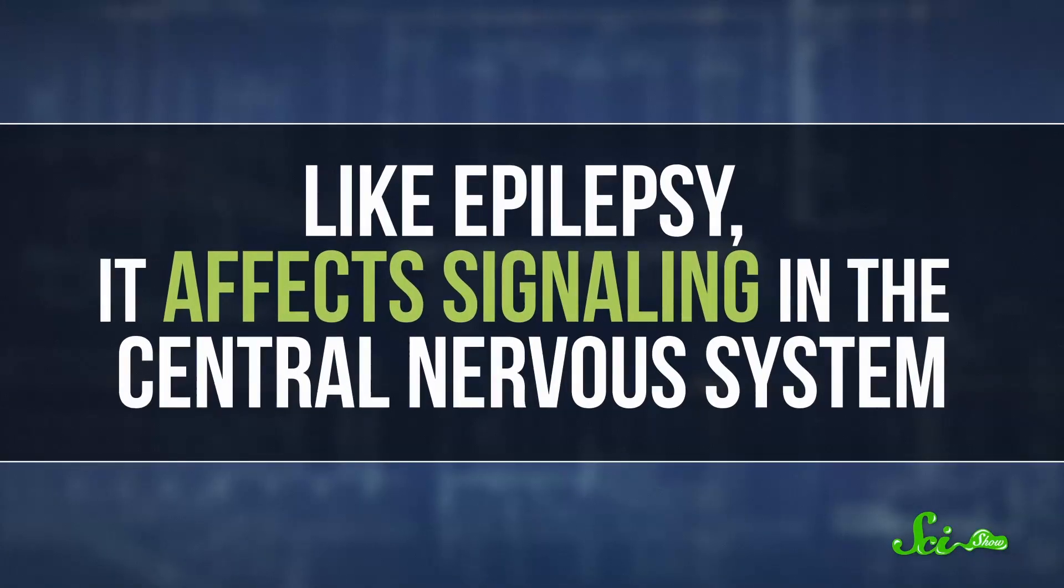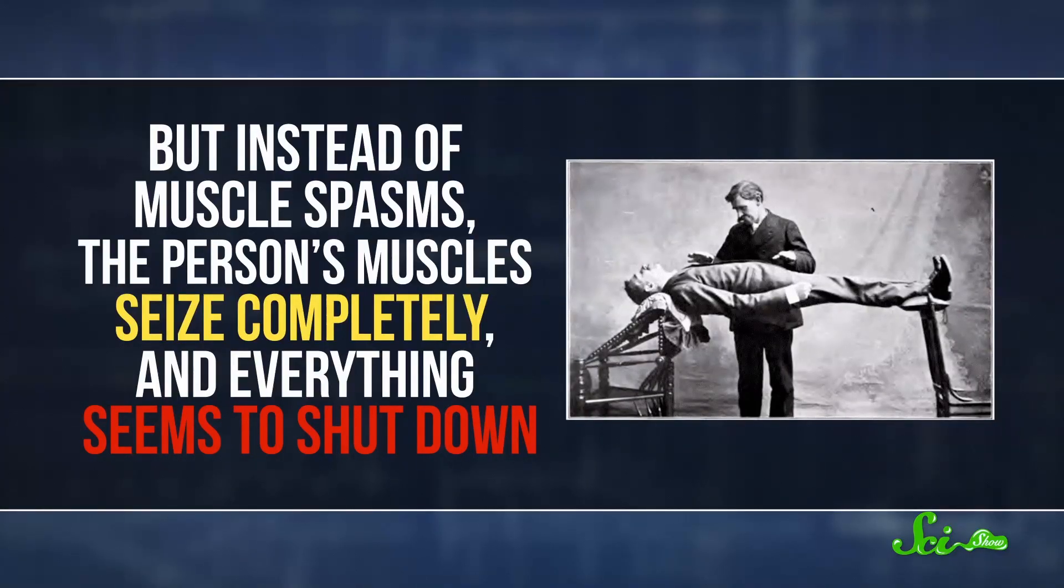Like epilepsy, it affects signaling in the central nervous system, but instead of muscle spasms, the person's muscles seize completely, and everything seems to shut down. They can't move at all, and their heart and respiration rates slow down until it looks like they're actually dead. And since doctors back in the day didn't have access to sensitive machines to measure whether someone was alive, they often thought someone experiencing a cataleptic seizure had died.